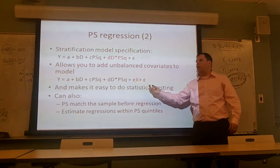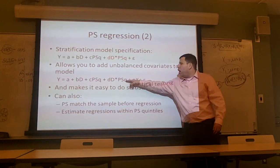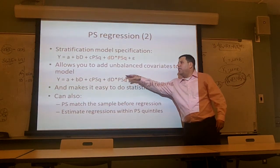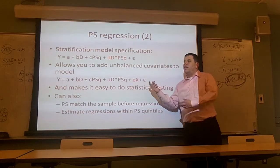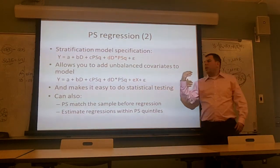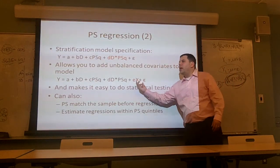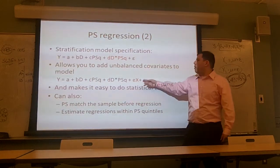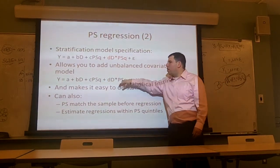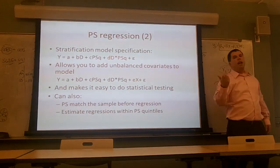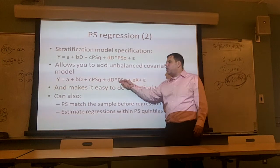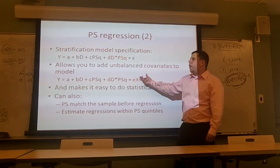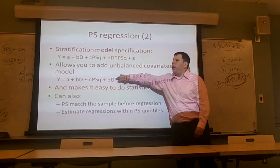You can also add covariates to this regression model. This is also where you address unbalanced covariates — if you're interested in some variable's independent contribution to the outcome, you probably don't want to put it in the propensity score, you can stick it directly in the regression model. The propensity score is the place to put all those nuisance covariates that matter for potentially biasing your estimates but whose particular relationship with the outcome you don't care about.